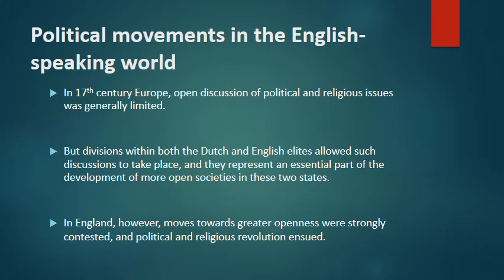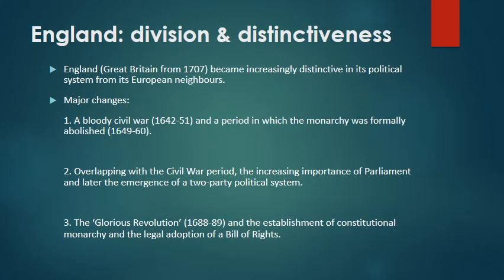In England, however, moves towards greater openness were strongly contested, and political and religious revolution ensued. Although England and Holland shared many characteristics during the early modern period, including relatively free printing regimes and the increasing importance of mercantile capitalism in their societies, England — Great Britain as it became from 1707 onwards — became increasingly distinctive in its political system compared with its European neighbours.